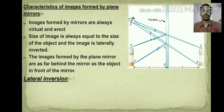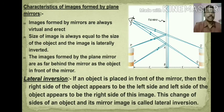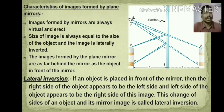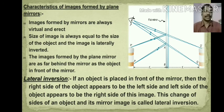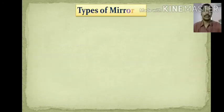Lateral inversion: if an object is placed in front of a mirror, the right side of the object appears to be the left side in the image, and the left side appears to be the right side. This change of sides between an object and its mirror image is called lateral inversion.